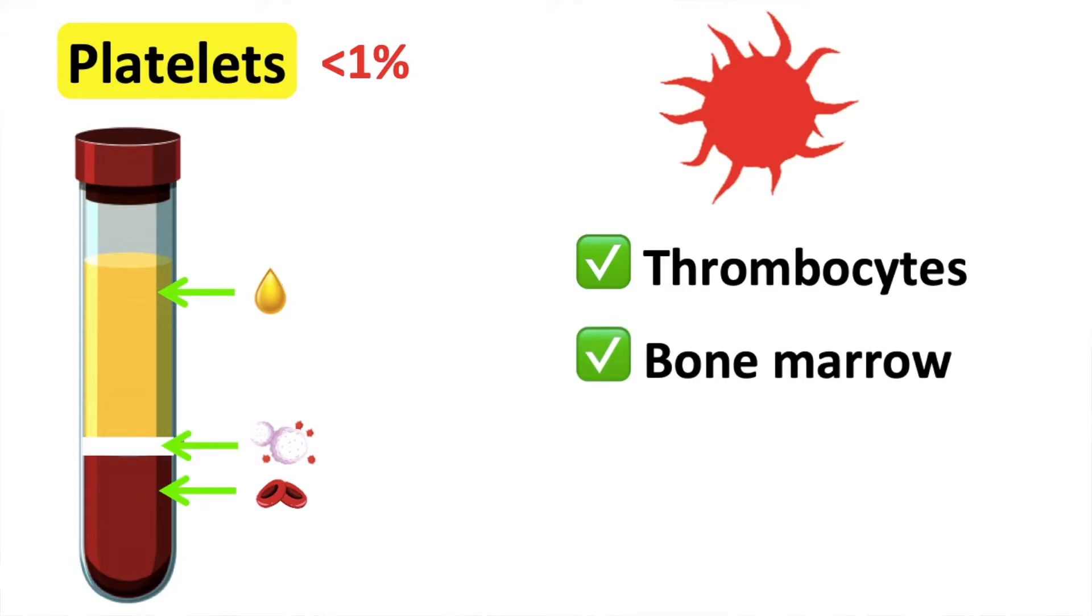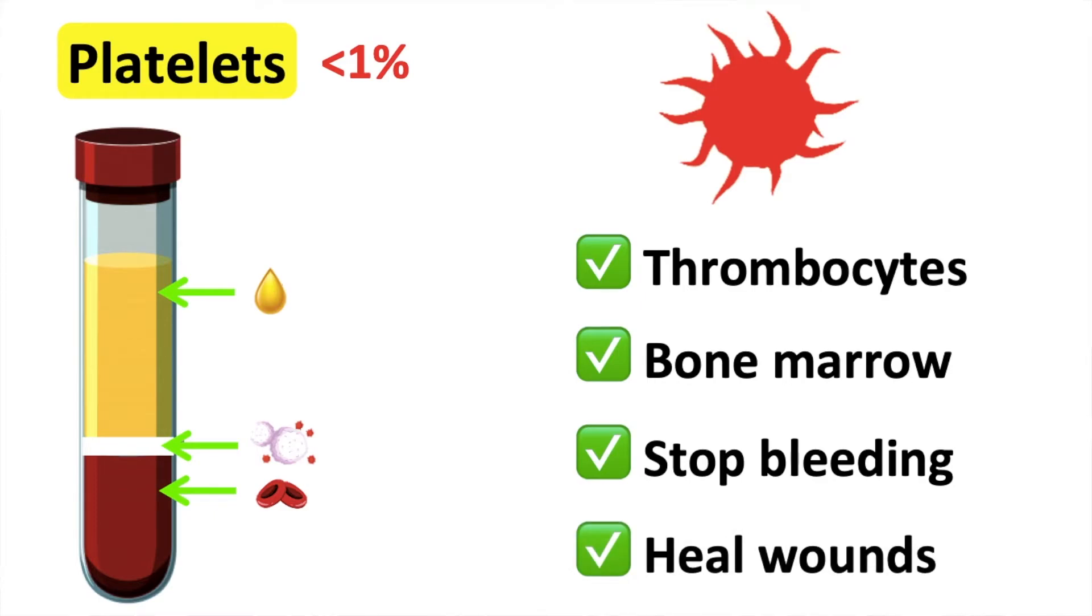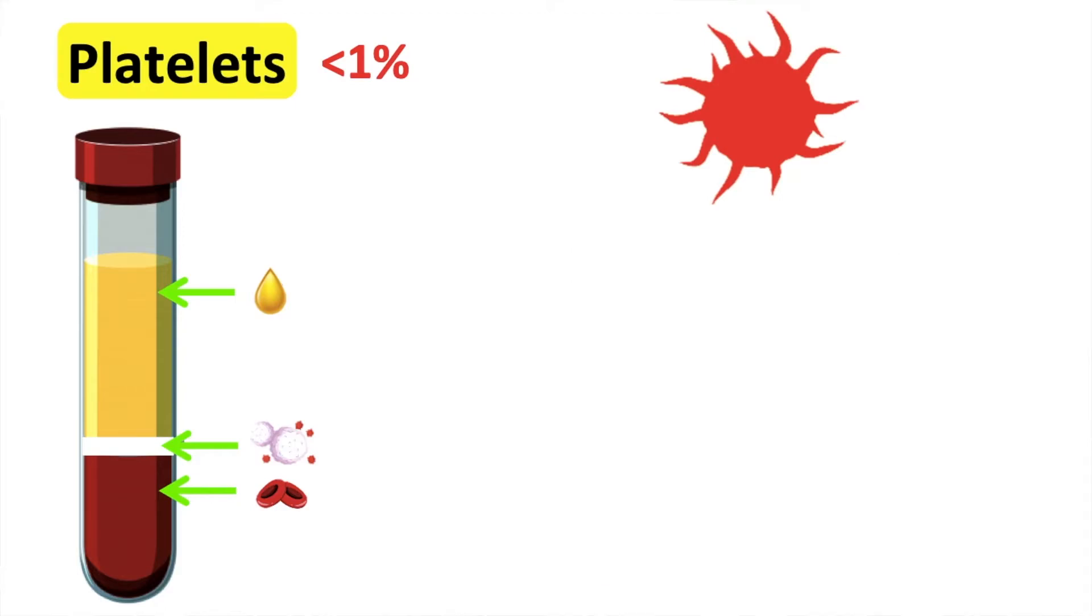They help to stop bleeding and help to heal wounds by forming blood clots. When you injure part of your body, the blood vessels just below the skin become damaged and can cause bleeding.